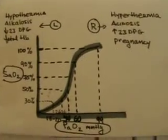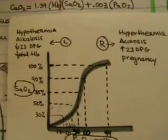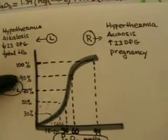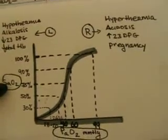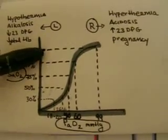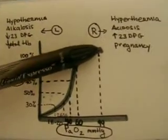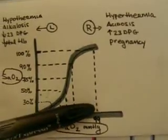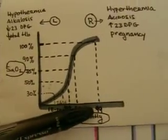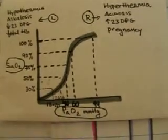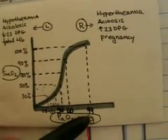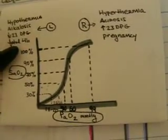We can start off by asking: what happens when the hemoglobin is 100% saturated with oxygen — or the saturation of oxygen is 100%, for example, in the arterial system? We can extrapolate from the graph and say that the partial pressure of oxygen is approximately 99 millimeters of mercury in the arterial system, in which the oxygen saturation is 100%.